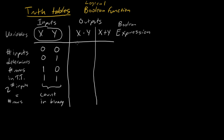Take x AND y as an example. As long as both x and y are true, then x AND y is also true. So zero AND zero — they're not both true, so zero. Zero AND one — nope, zero. Same for one AND zero. But one AND one — those are both true, so one. That's how we write our outputs, evaluating row by row.